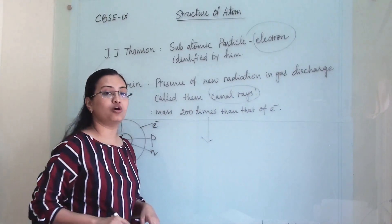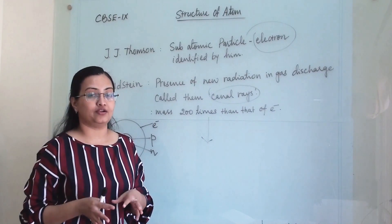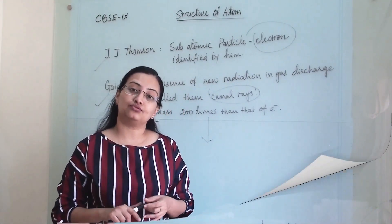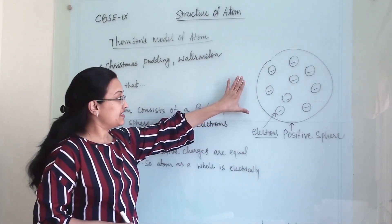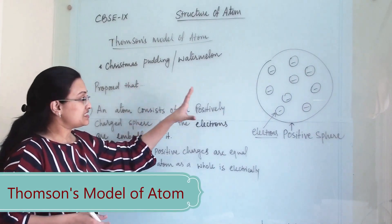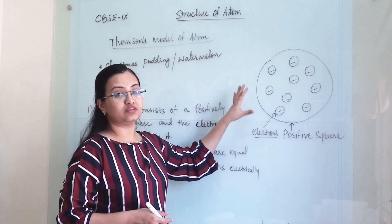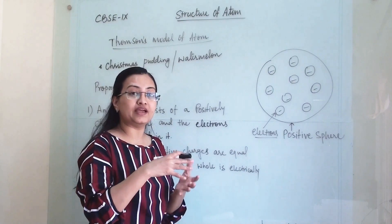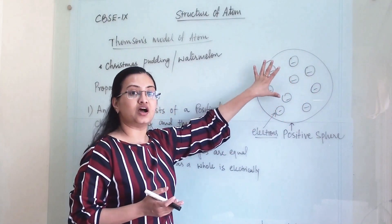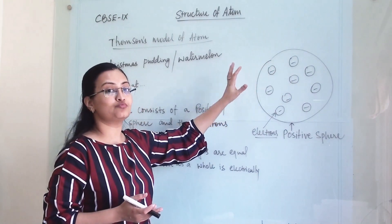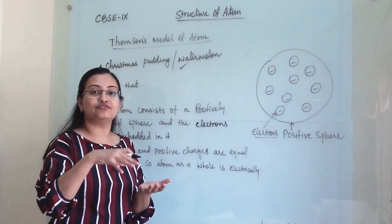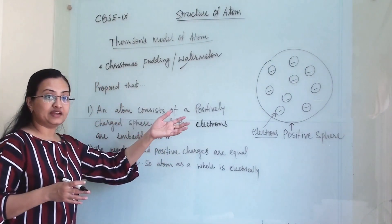Goldstein's discovery later led to the identification of the proton as a subatomic particle. Now, Thomson proposed a model of the atom which he compared to a Christmas pudding and a watermelon. He suggested a positive sphere onto which electrons are equally distributed — just like dry fruits evenly distributed on a pudding, or seeds evenly distributed in a red watermelon.